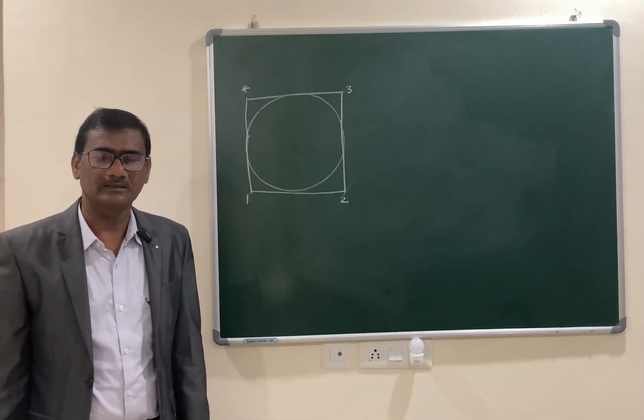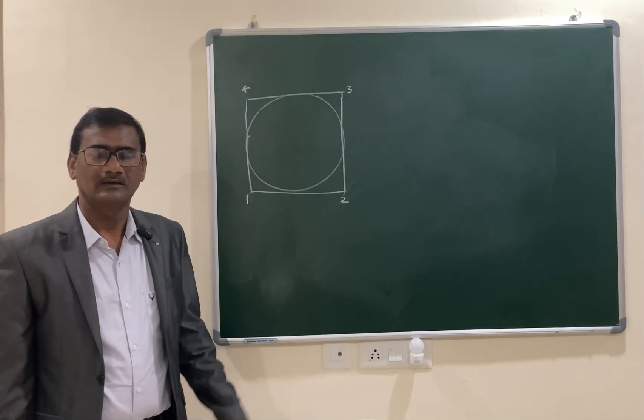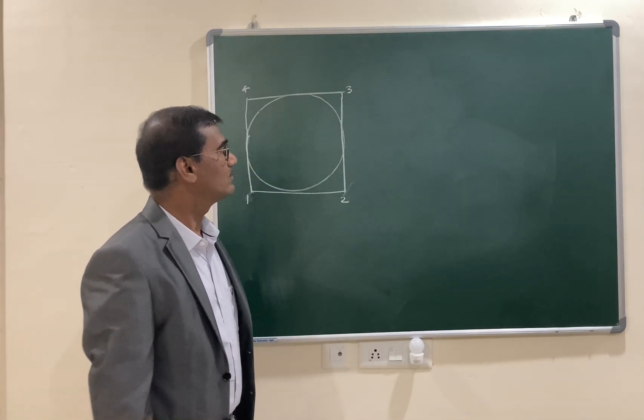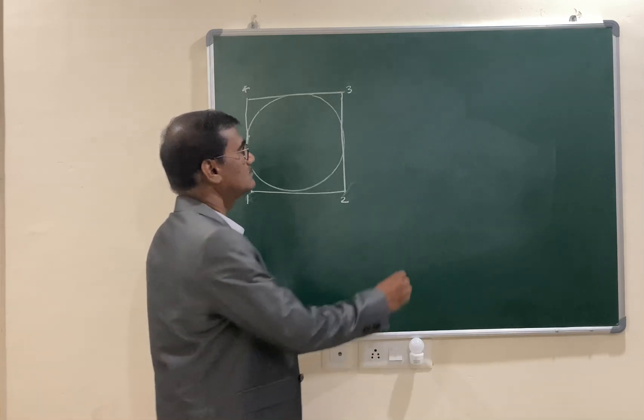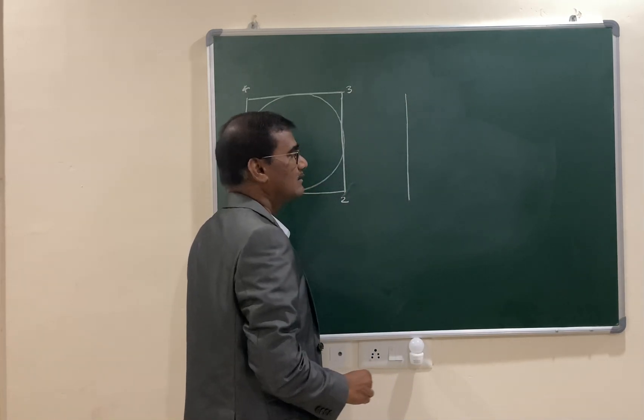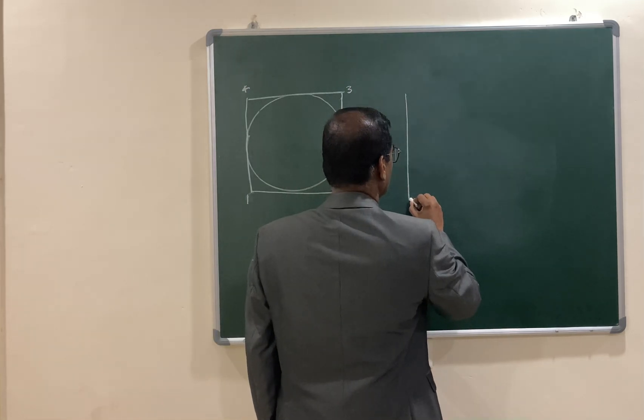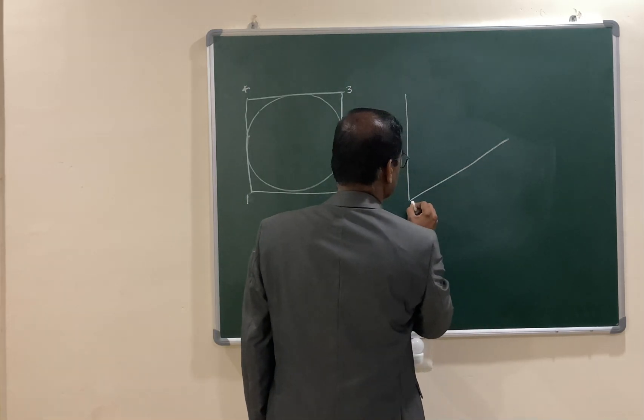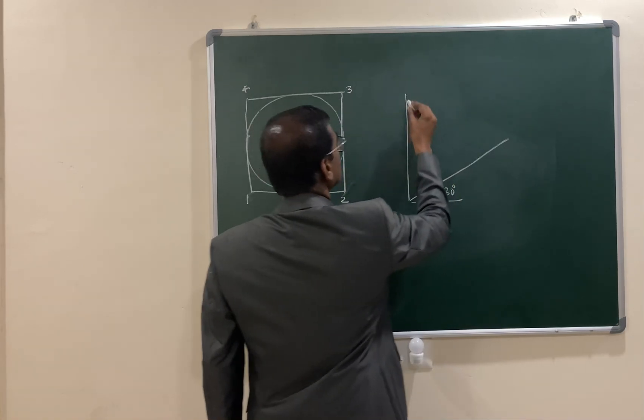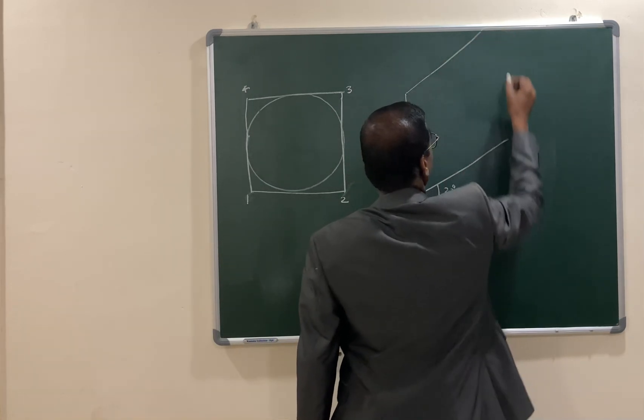Let us draw the isometric view of this square in front view as well as in top view. First of all, I am drawing in front view. As you know, vertical lines remain vertical and the horizontal remains at an angle of 30 degrees with the horizontal. Let us draw the given size, that is the diameter, and complete this view in front view.